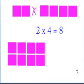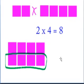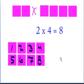What if we have 2 times 4? Well, that equals 8. Numerically it's represented by this equation, but if we have one group of 4 plus a second group of 4, that equals 8.